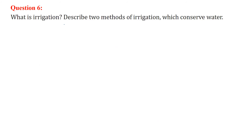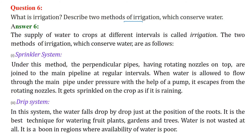What is irrigation? Water is one of the basic needs for any existence. The supply of water to crops at different intervals is called irrigation. There are two methods of irrigation that also conserve water.